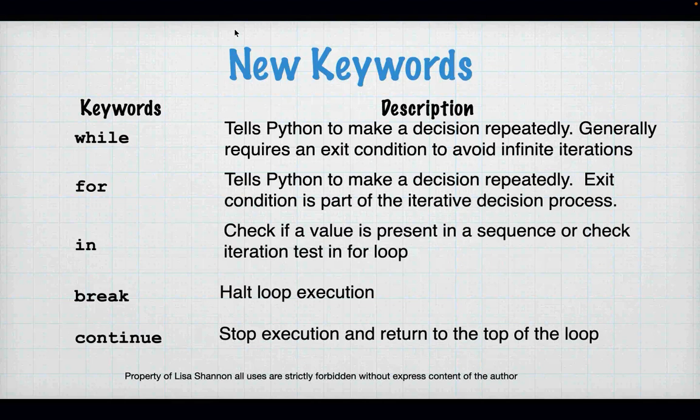While is basically a branch. We did if, elif, and else last week because we're making decisions. This week, looping is about making the same decision repeatedly until you don't need to make that decision anymore. While and for are the keywords we use for loops. While generally requires an exit condition to avoid infinite iterations — we'll talk about sentinel values in a couple of minutes. For is also about making a decision repeatedly, but its exit condition is part of its decision-making process.